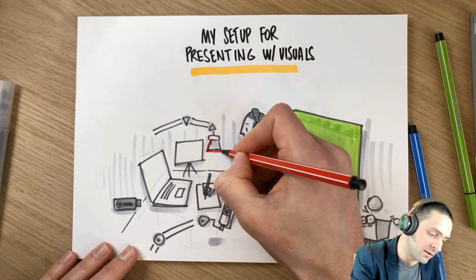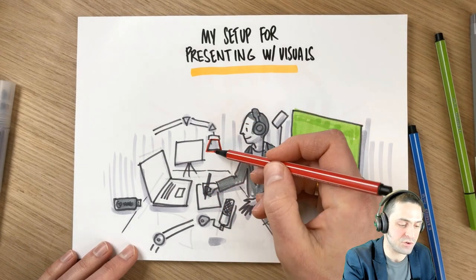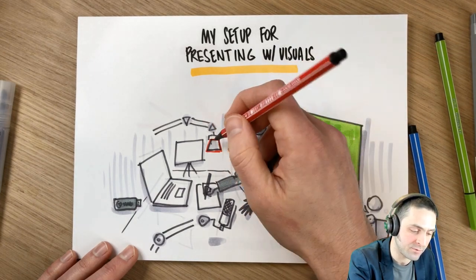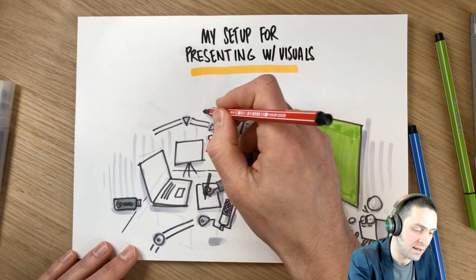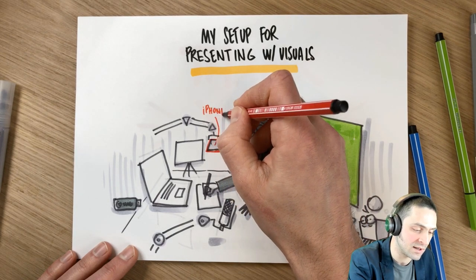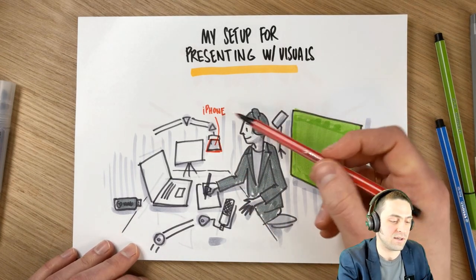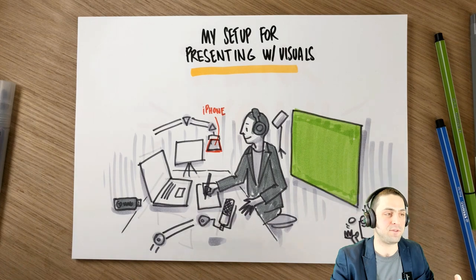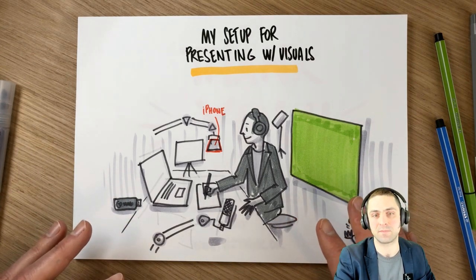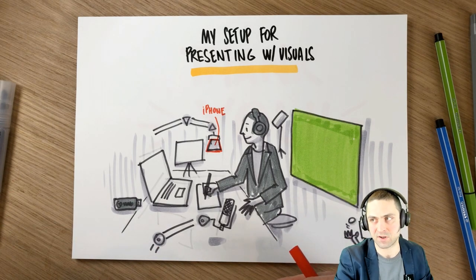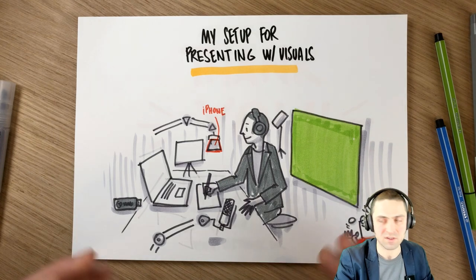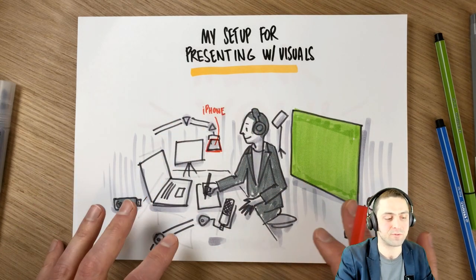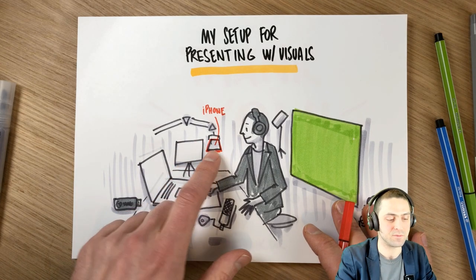The most critical hardware component is the camera used to project and broadcast what I'm drawing on the tabletop. It can be any camera — a regular webcam — but after a lot of experimentation with webcams and document cameras, I settled on an iPhone. The major reason is its built-in feature for adjusting light very well, making the picture quality much better compared to most document cameras and webcams.